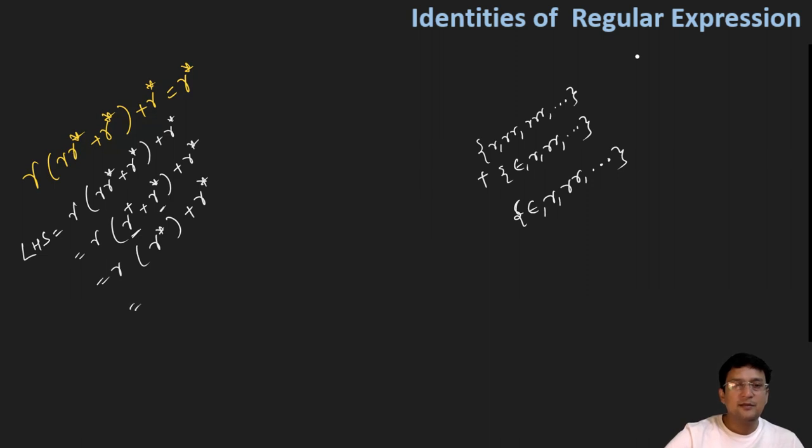Like this and similarly R, R star will be here, which means R's positive closure or plus R star, R's positive closure or union with R star. We just showed that this means R star, so this is equals to the right hand side part of the given equation. Hence, we can say that we have proved.